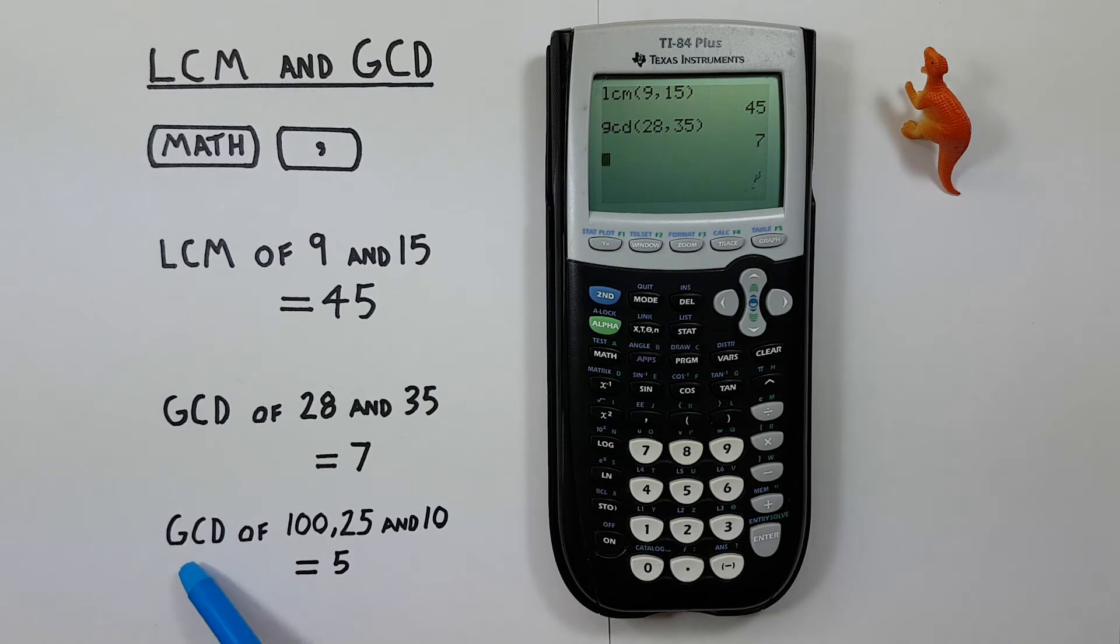What if we wanted to find the GCD or LCM of more than two numbers, like say the GCD of 100, 25, and 10? Well, you can actually do this on this calculator by embedding one GCD inside of another. So, for example, if we were given this here,